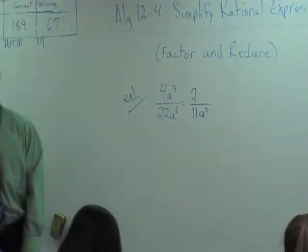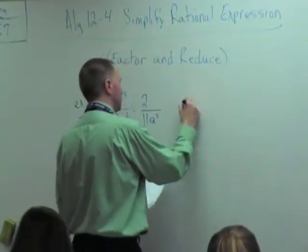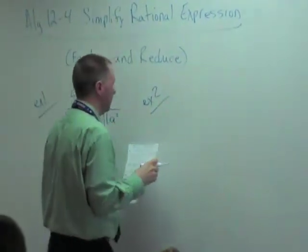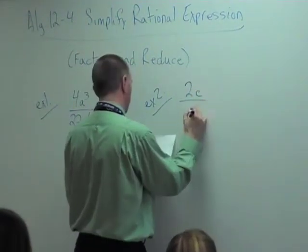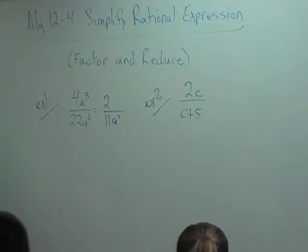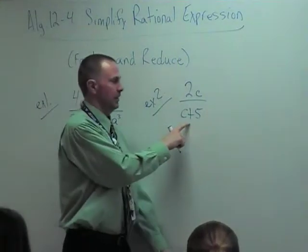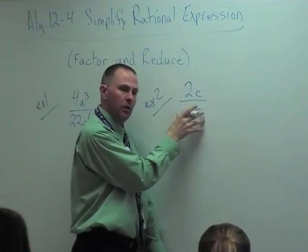Now on some of these problems, you will not be able to reduce, and you just have to recognize it. Example two is 2c over c plus 5. You can't reduce that with this because this is grouped together in your denominator. It's a whole part here.